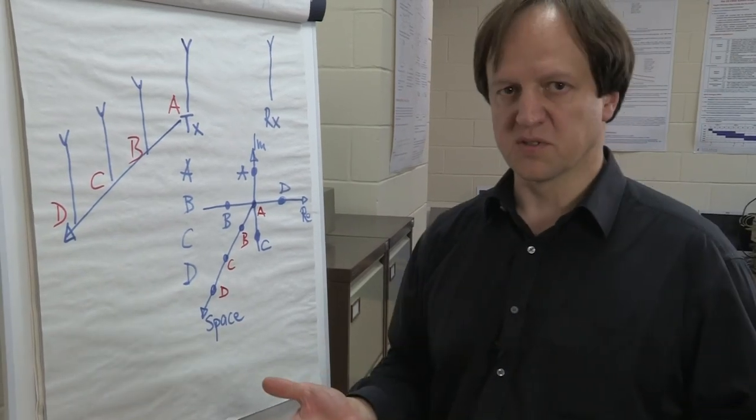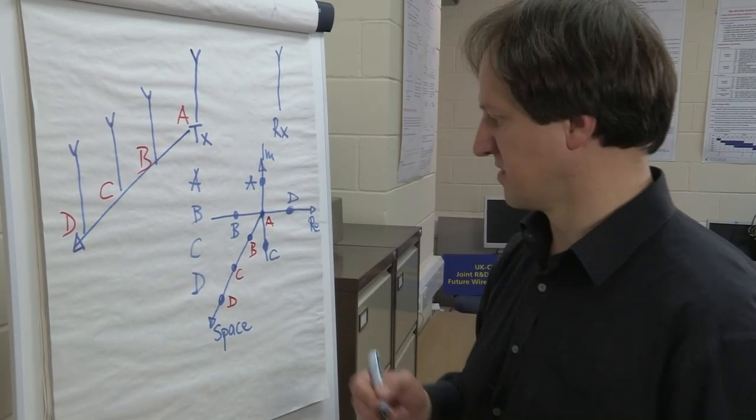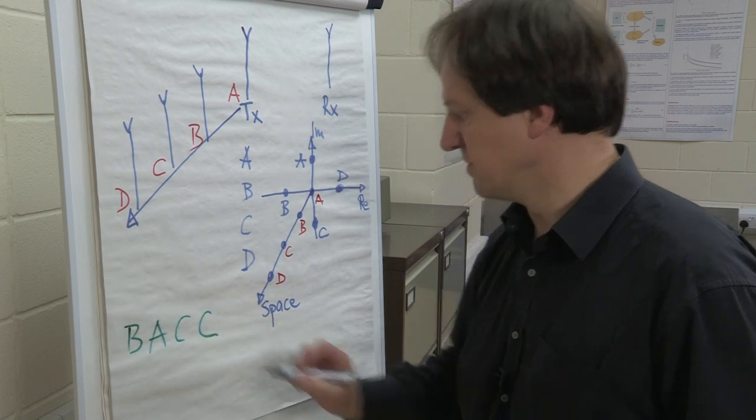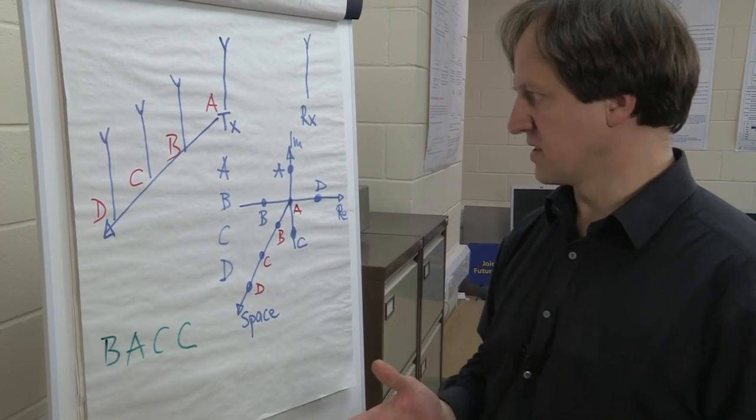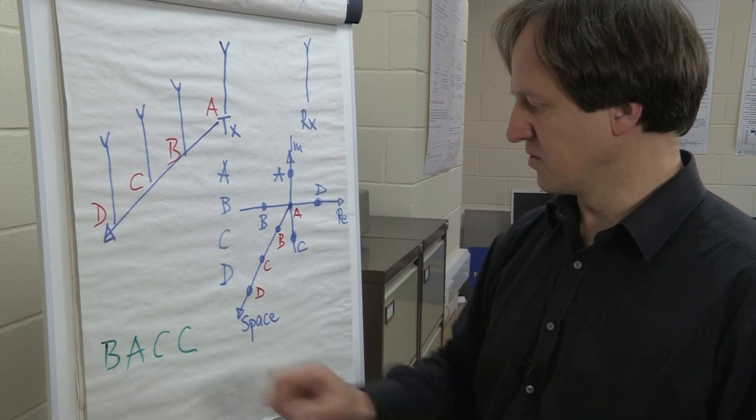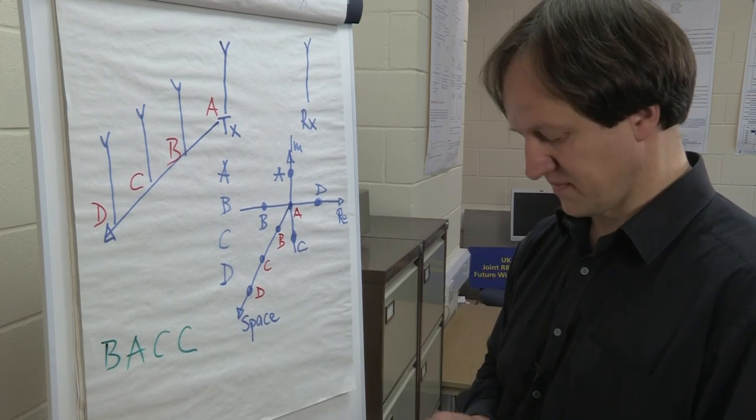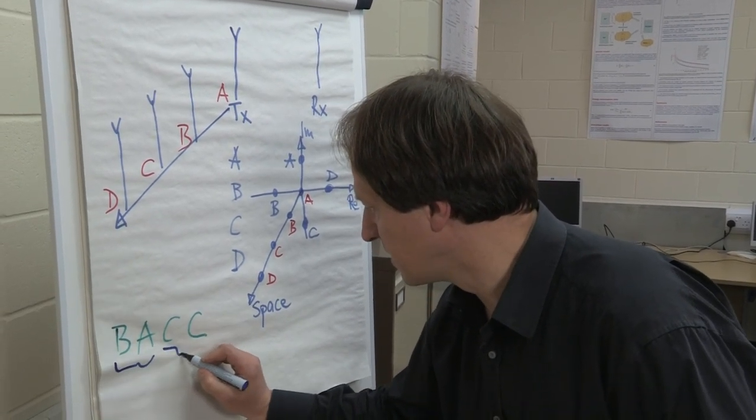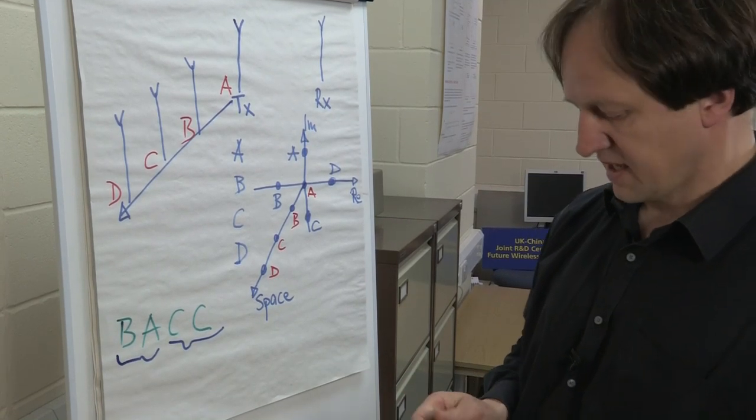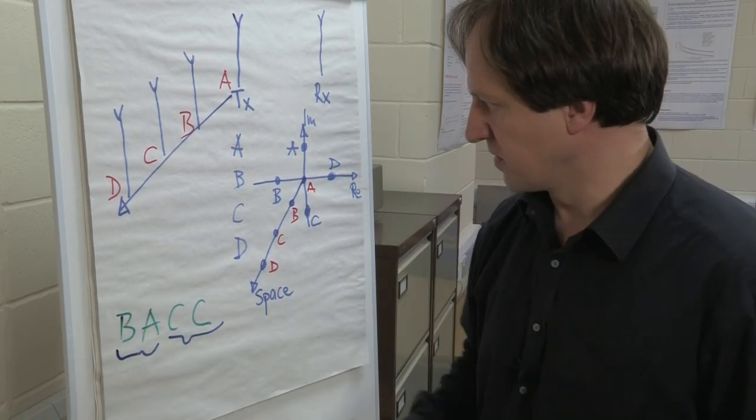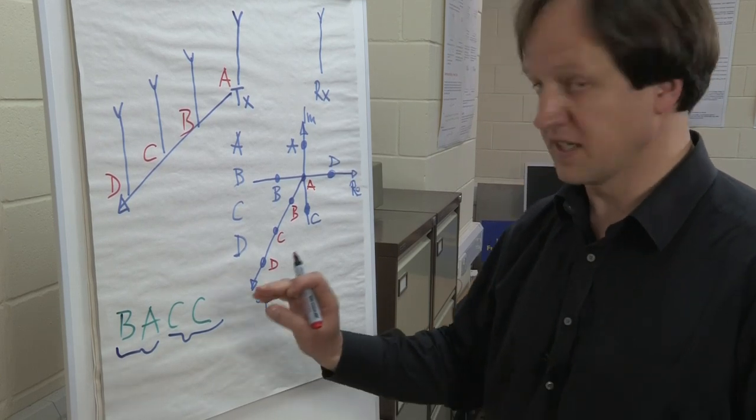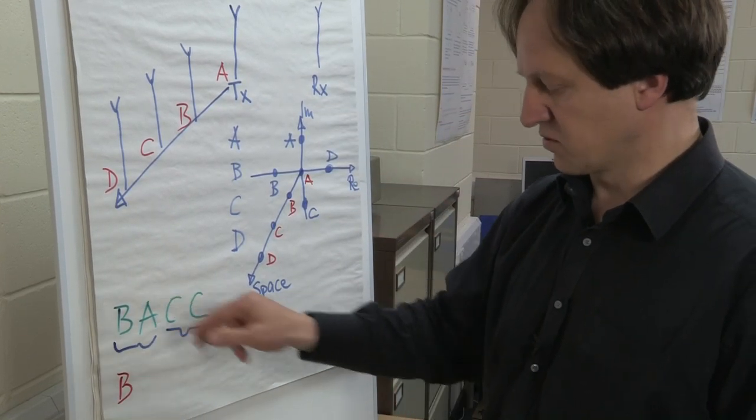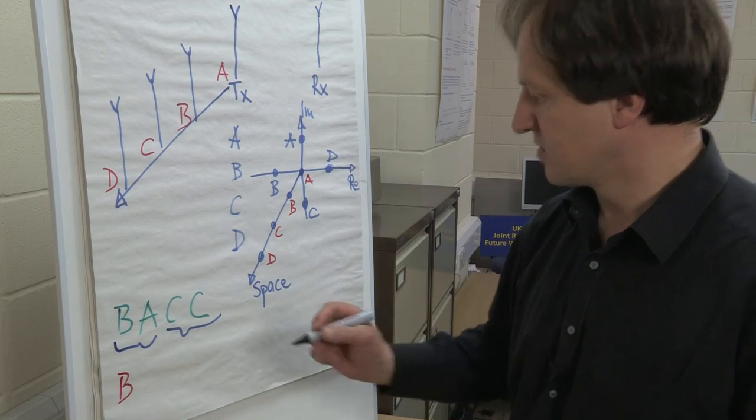Now let's assume we want to transmit a random sequence of symbols. Say we want to transmit B, A, C, C. The way how it works is that we now would group these symbols into pairs of two. This is our first pair, and this is our second pair. And we would define the first symbol as the one that is transmitted in the spatial domain. We mark it red. And the second symbol in that group would be transmitted in the signal domain. So we mark it blue.